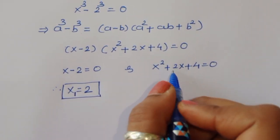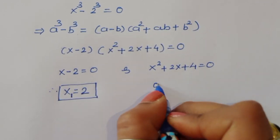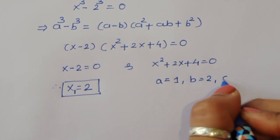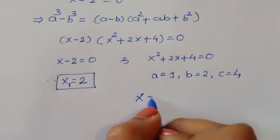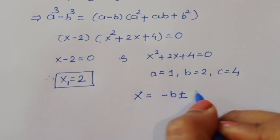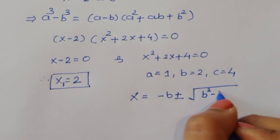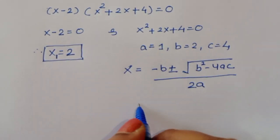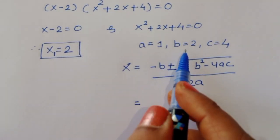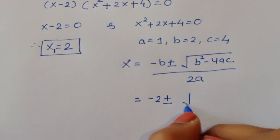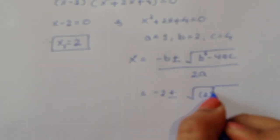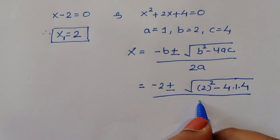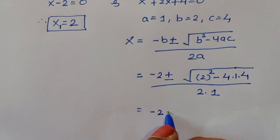Next, for x squared plus 2x plus 4 equals 0, the coefficients are: a equals 1, b equals 2, and c equals 4. Using the quadratic formula, x equals minus b plus or minus square root of b squared minus 4ac, all divided by 2a. Substituting: x equals minus 2 plus or minus square root of 2 squared minus 4 times 1 times 4, divided by 2 times 1.